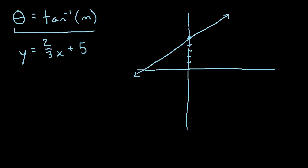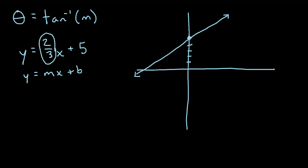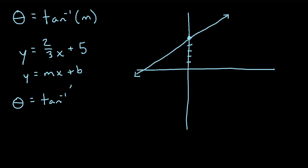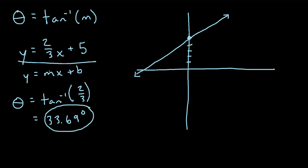I've rewritten the formula that we just derived for the angle of inclination. Let's say we're told we have the equation of a line y equals 2/3 x plus 5, and we want to find the angle of inclination. First we have to identify the slope. We can see it's written in the form y equals mx plus b, where m is the slope. So in this case, 2/3 is the slope. To find the angle of inclination, we take the inverse tangent of 2/3. If you punch that into a calculator, you get about 33.69 degrees.